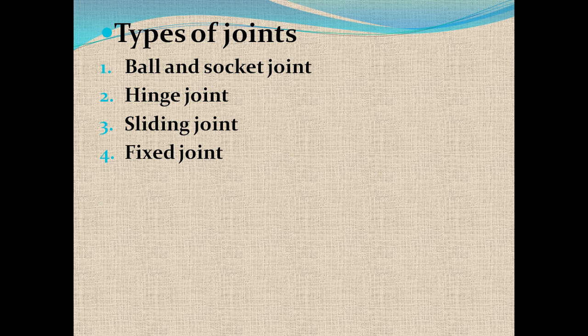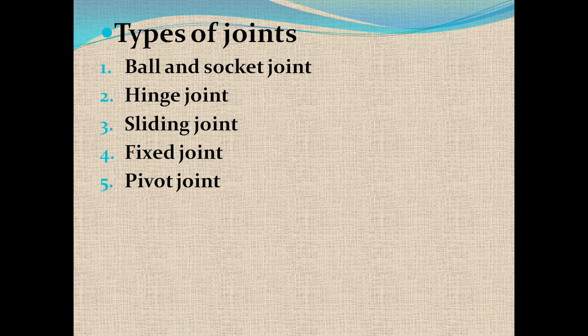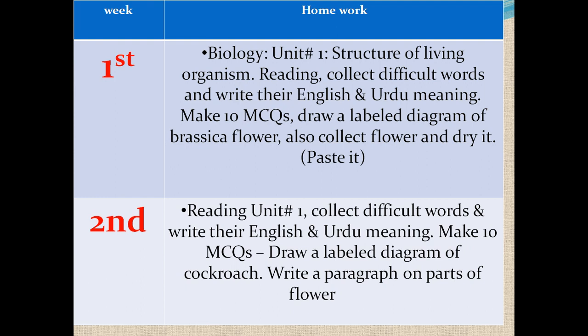Fixed joint: these joints have no ability of movement and are present in the cranium of the skull. Pivot joint: these joints allow only a slight motion to the bones and are present between the two vertebrae of the vertebral column. This was the end of the last lecture and also of Unit number one.